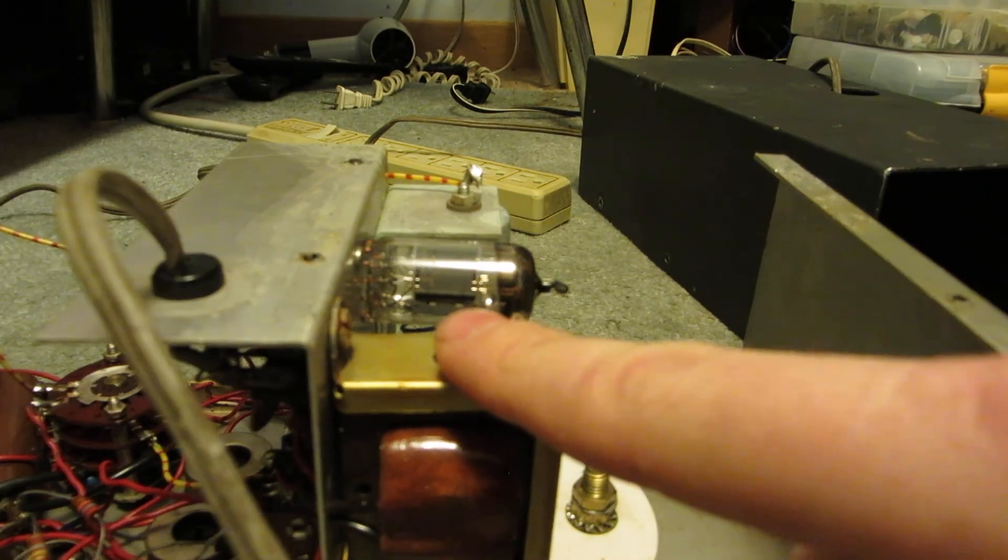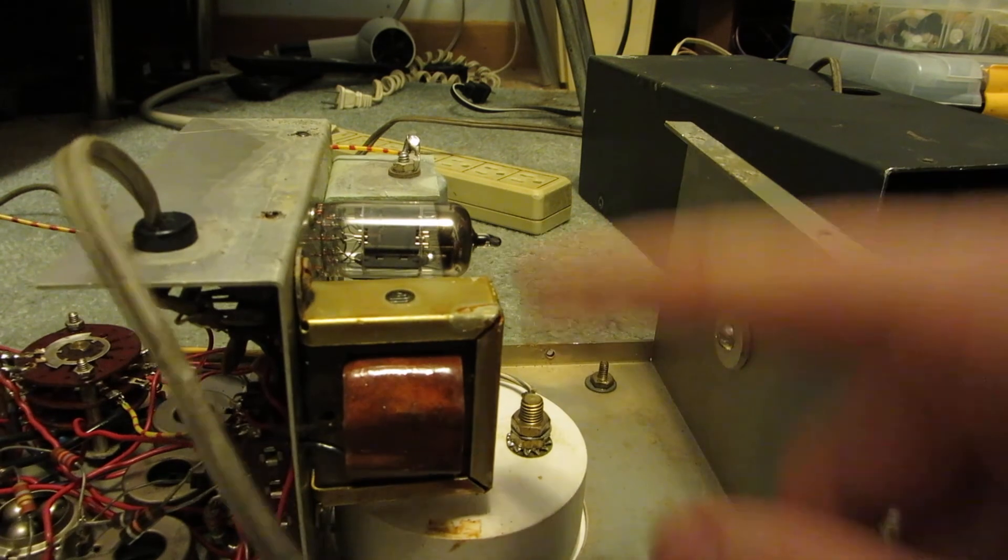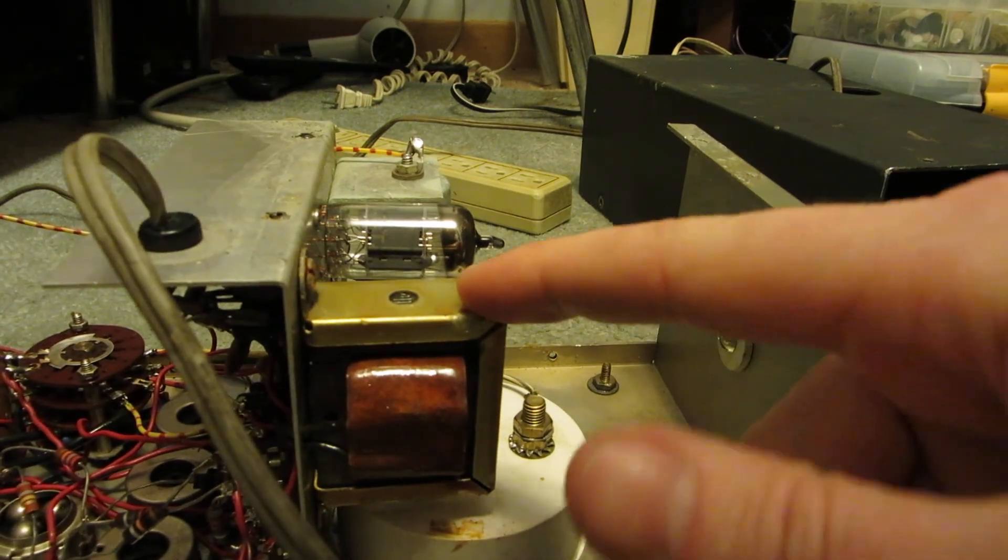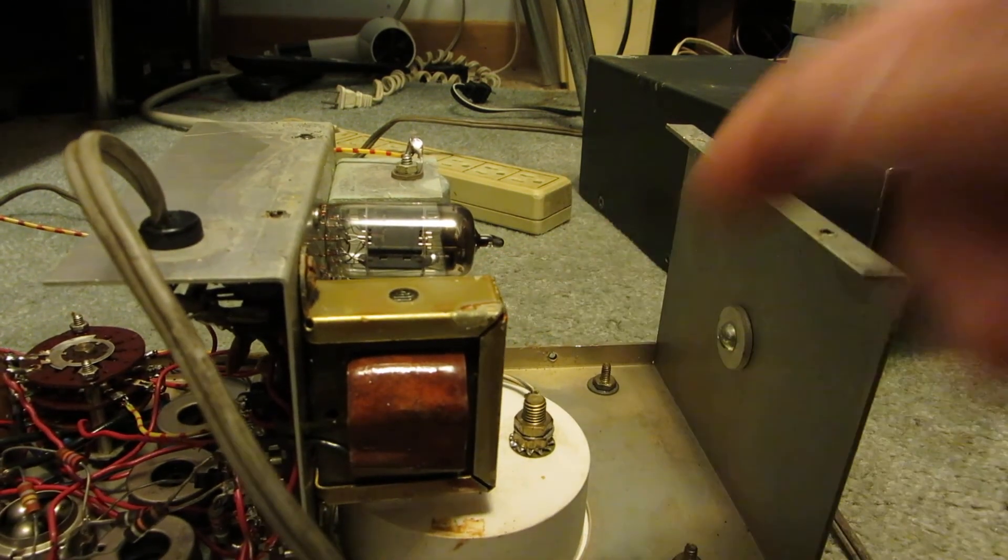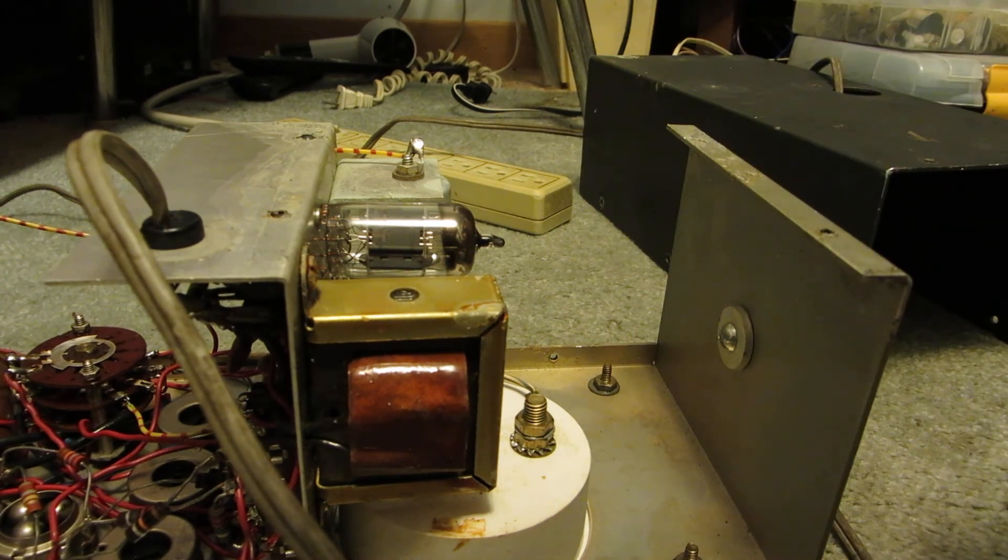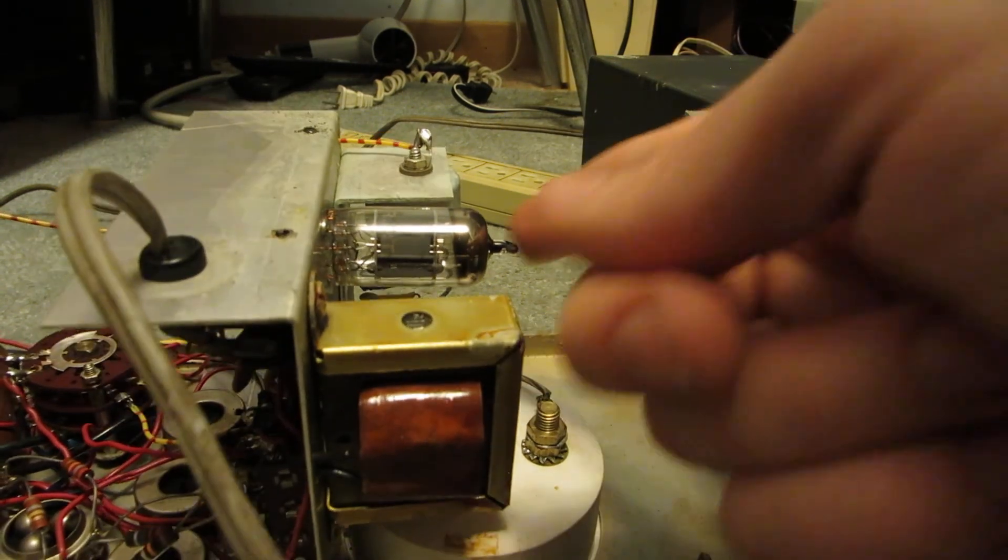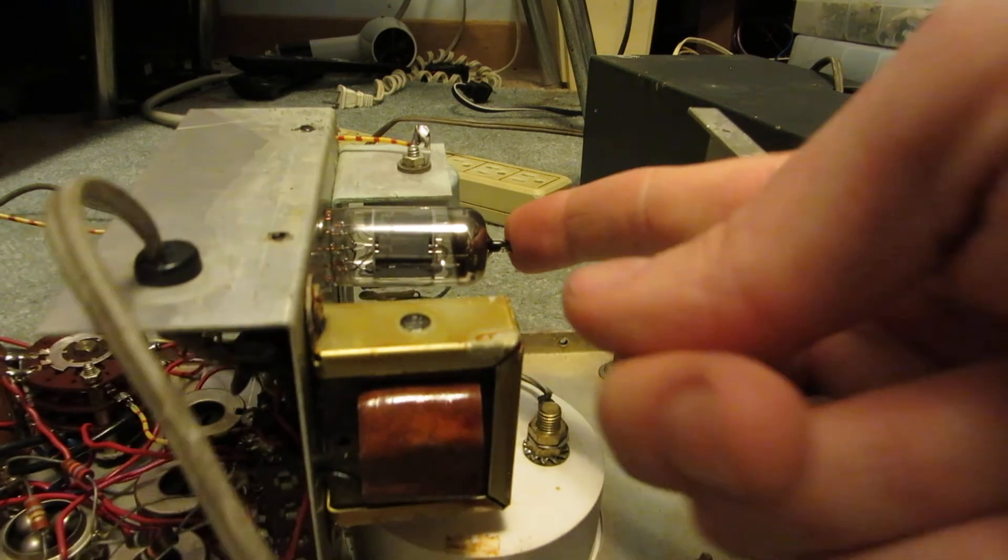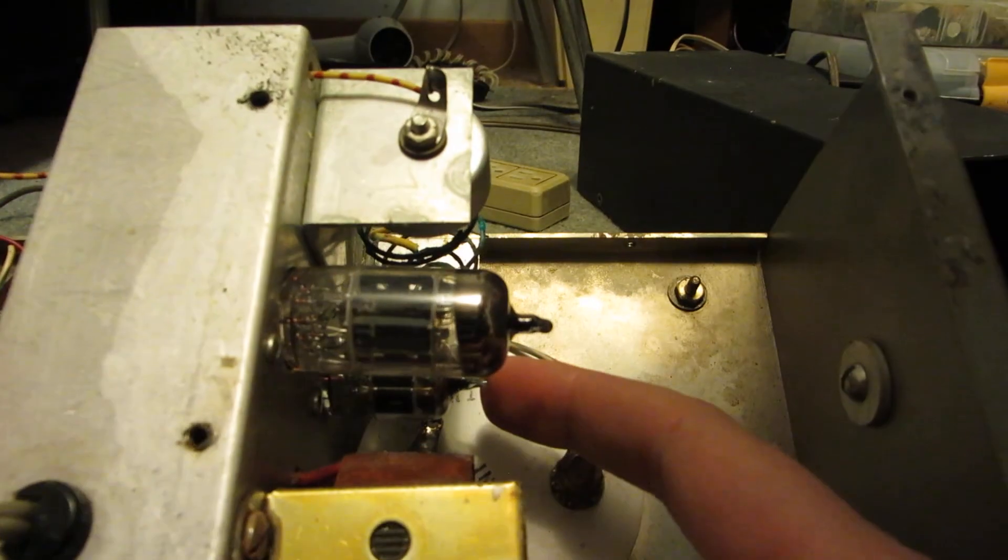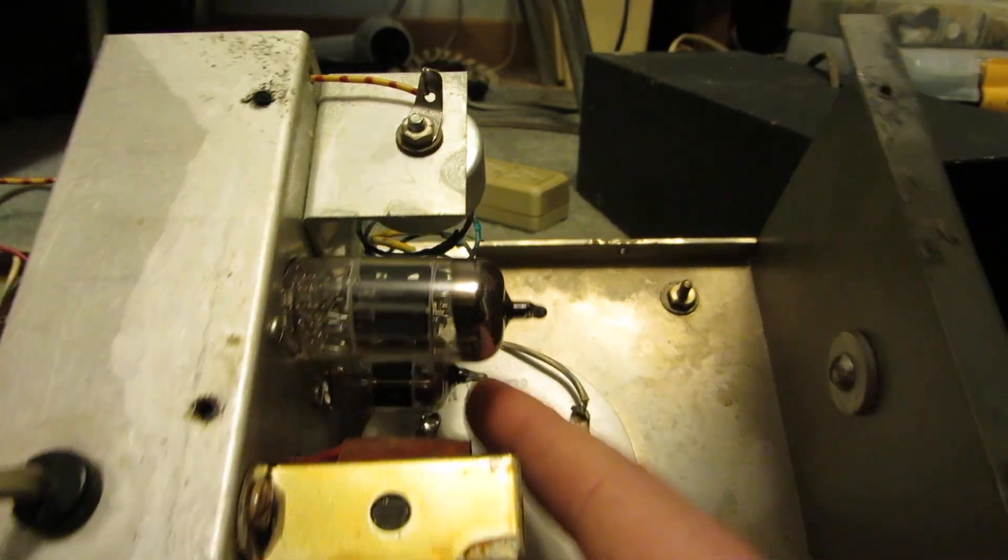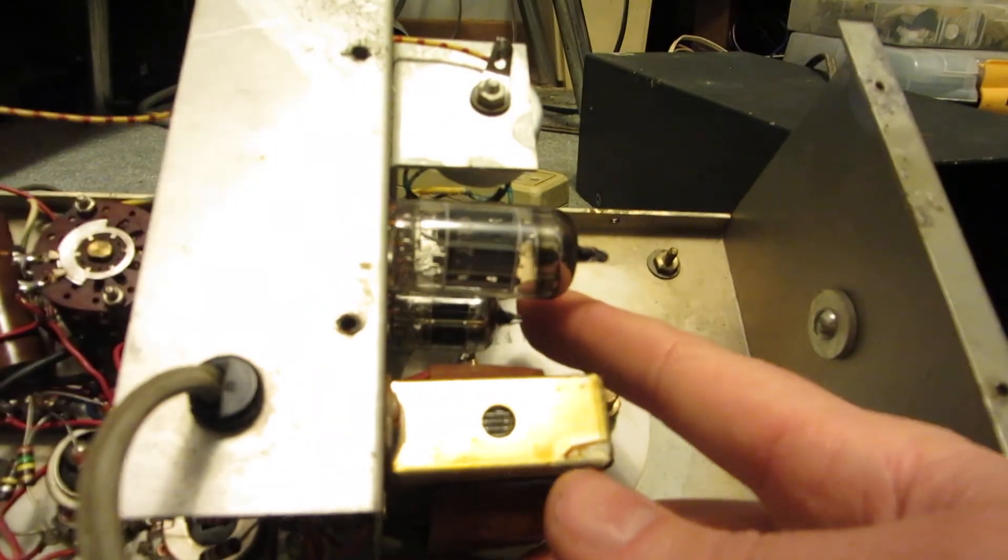And you've got your step-down transformer. That'll supply the correct voltage to run the tubes, because these tubes obviously aren't 120 volts. A 12 would be the filament will be 12 volts, and a 6AL5 that would be 6.3 volts.